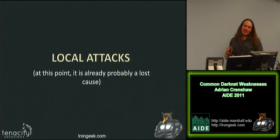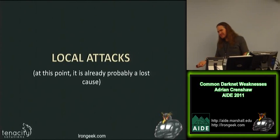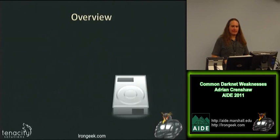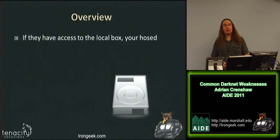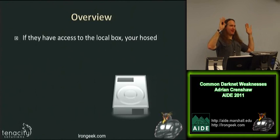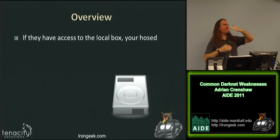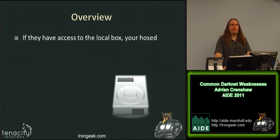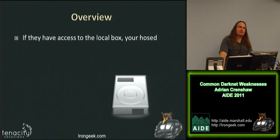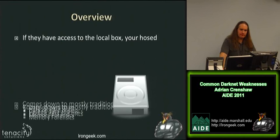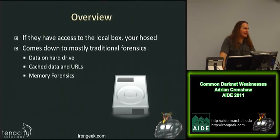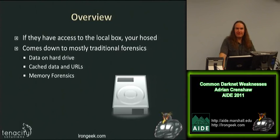Local attacks: at this point, if someone has seized the machine, they're probably going to find out where you've been. One nice thing about the TOR Browser Bundle is that by default when you close it, it doesn't save history, cookies, or anything like that. But if someone grabs your browser and the sites you visited are still in your history, they know where you've been. Pretty much if someone has access to your local box, you're done — as the old security maxim says, if someone else has physical access to your box, it's no longer your box. It comes down to traditional forensics: data on the hard drive, cache data and URLs, and memory forensics if all else fails.